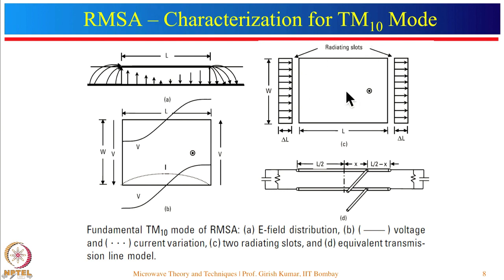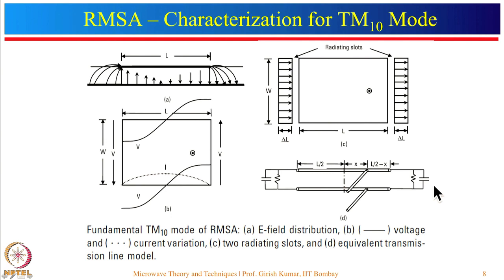The rectangular microstrip antenna can also be modeled as a transmission line for its fundamental mode, since there is no field variation along the width. The length is approximately lambda/2. Each radiating edge is represented by a radiation resistance in parallel with a fringing field capacitance.